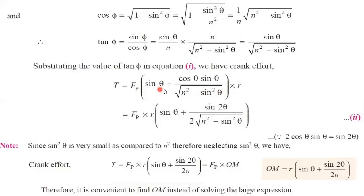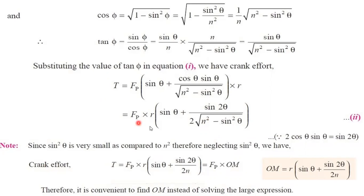Bringing R to this side and substituting tan φ, we multiply and divide by 2 so that 2 cos θ sin θ = sin 2θ. Since sin²θ is very small compared to n², we neglect it, so √(n² − sin²θ) ≈ n. Finally, the crank effort T = Fp × R × [sin θ + sin 2θ / (2n)]. The entire term next to Fp can be written as OM from the Klein's construction, where OM = R × [sin θ + sin 2θ / (2n)].